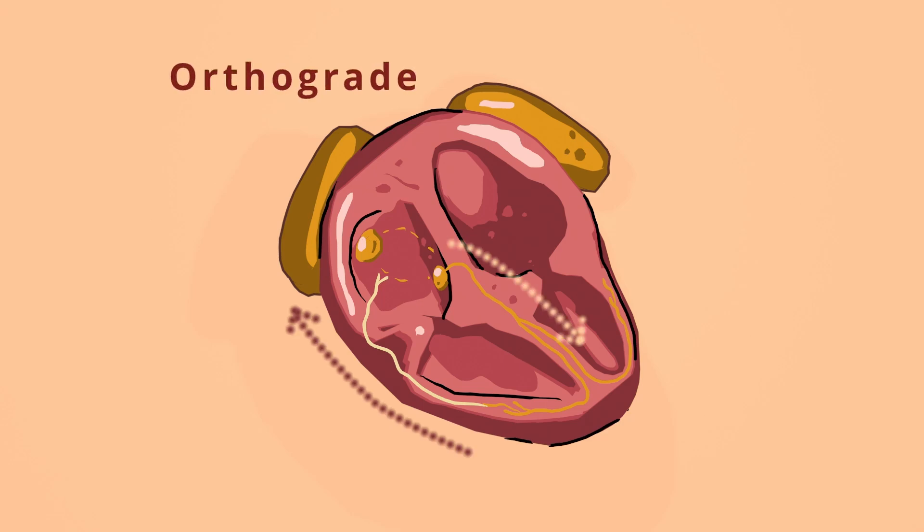Depending on how the action potential travels through this loop we can have an ortho-grade AVRT shown here with a clockwise conduction or we could also have a retrograde AVRT if the action potential travels in this anti-clockwise way.